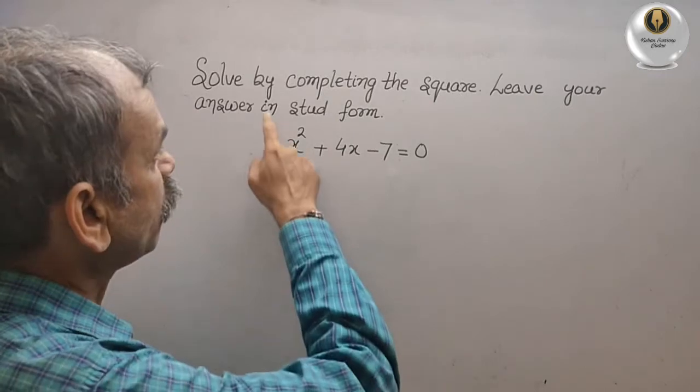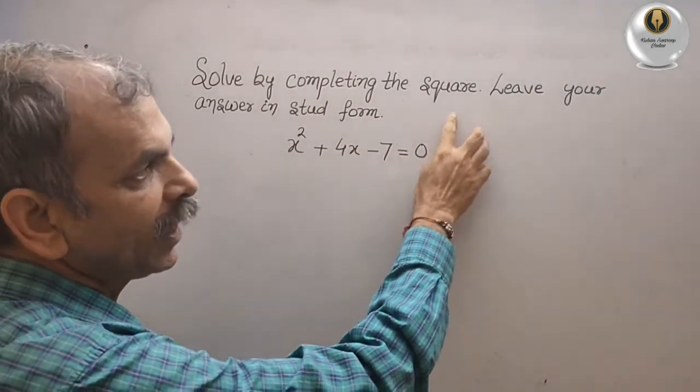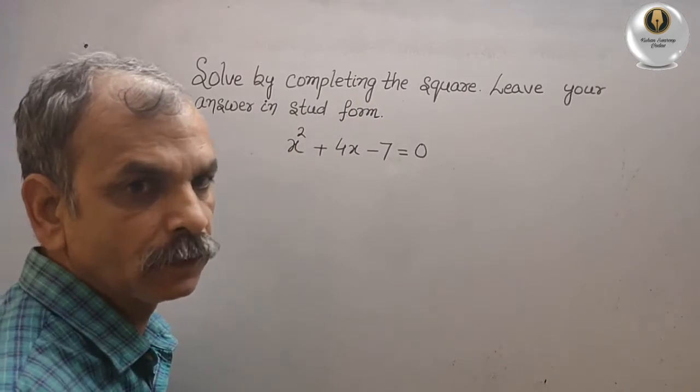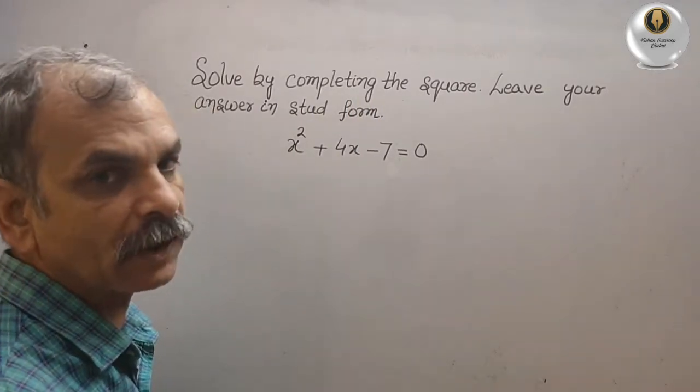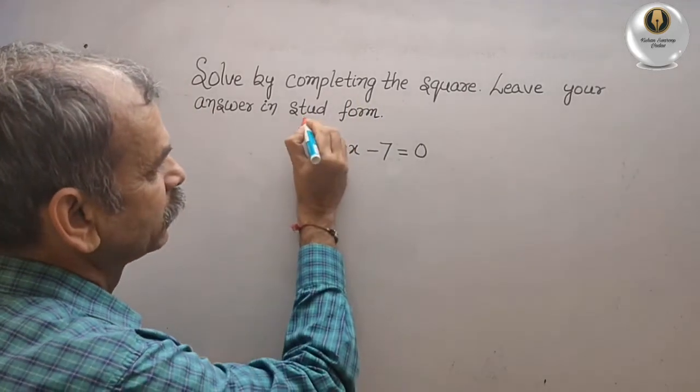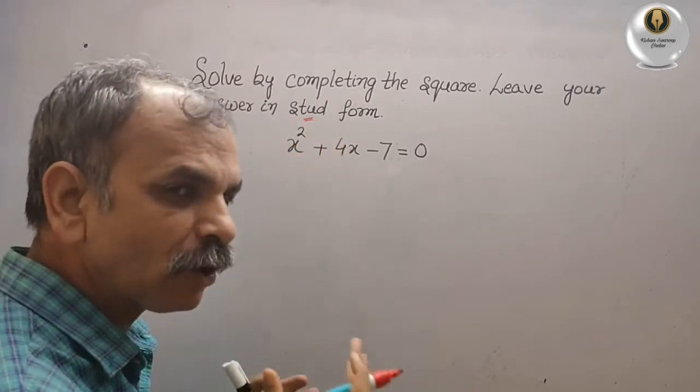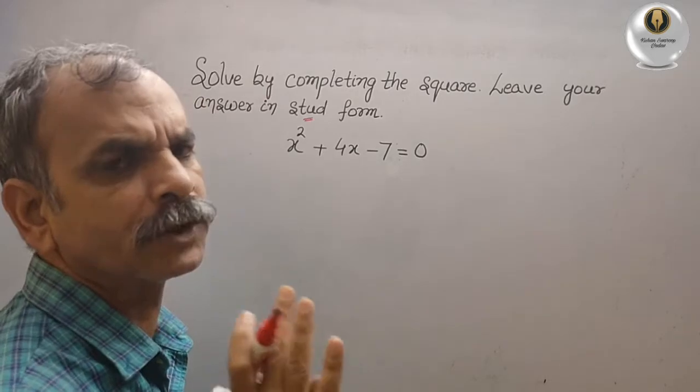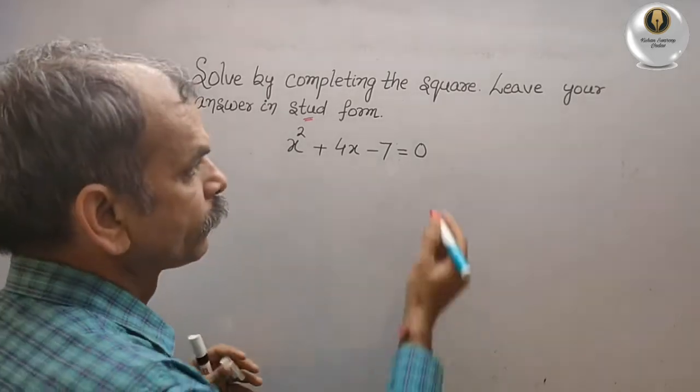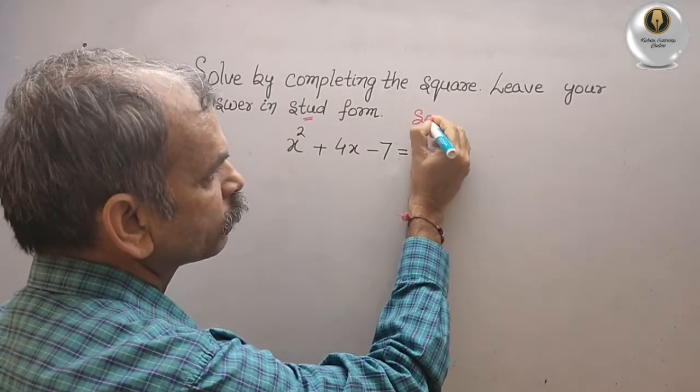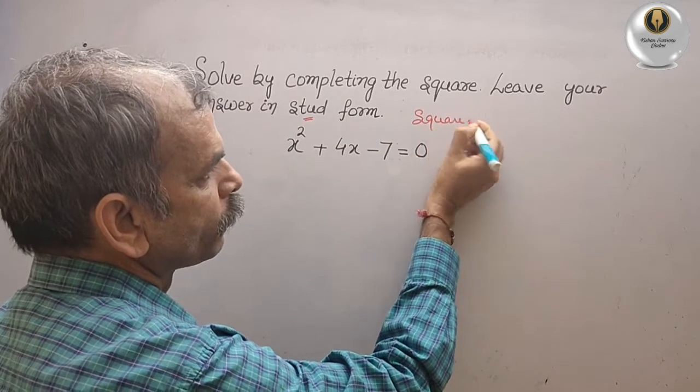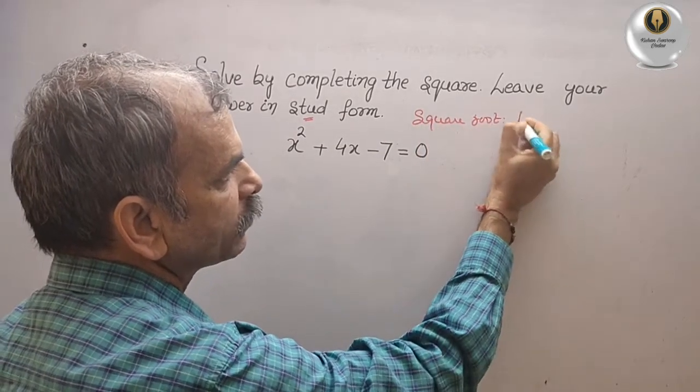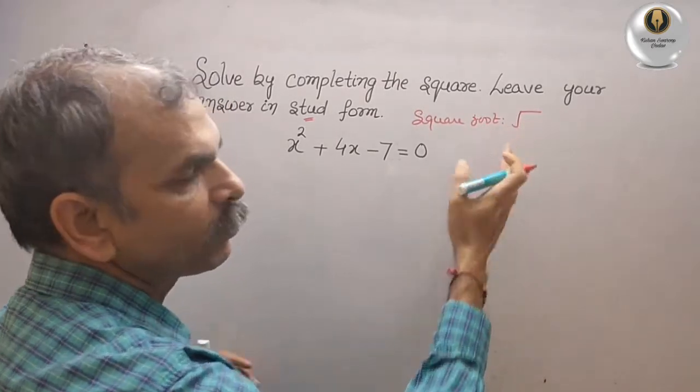Your question is solve by completing the square, leave your answer in surd form. First, we will understand what you mean by surd. Surd means you have to leave your answers in square root form. That is the symbol for square root.